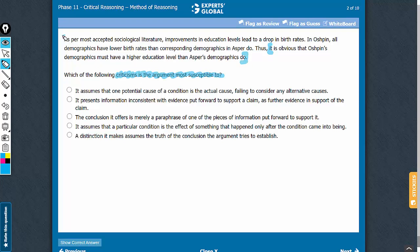See, the premise here mentions that higher education leads to a drop in birth rate, but this does not mean that higher education is the only factor that leads to a decline in birth rates. There may be other factors.